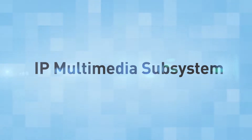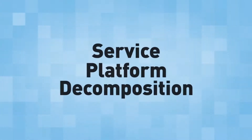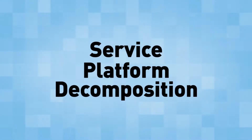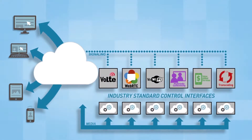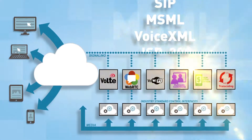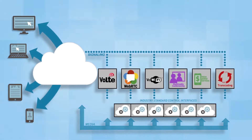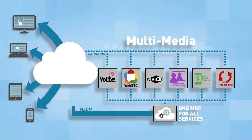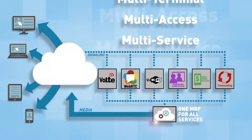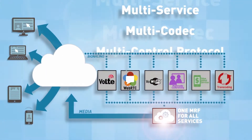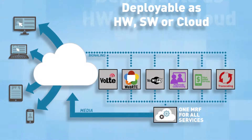Modern service delivery architecture such as IMS embraced the principles and benefits of service platform decomposition, achieved by separating the unique call processing logic from the common media processing functions. The RateAssist OneMRF strategy consolidates common media processing capabilities into a versatile resource that can be shared across all interactive voice and video services in your network, regardless of how subscribers access those services.